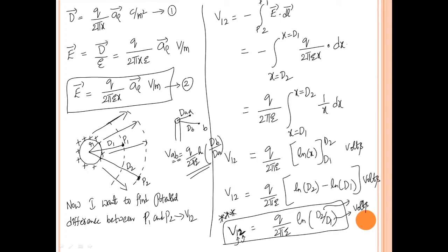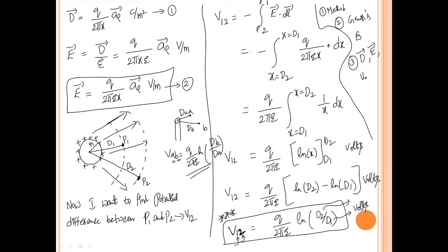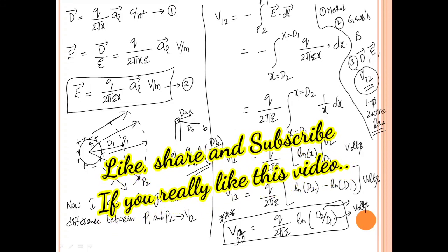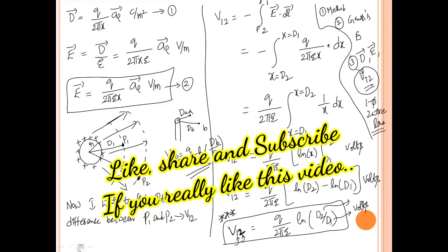In this video, we understood the method used to find capacitance and applied Gauss's law to find electric field intensity. First we found electric flux density, then electric field intensity, then the potential difference. In the next class, using this potential difference, we will find the capacitance of a single-phase two-wire line and from that, the capacitance of a single line. Thank you very much. Bye everyone.